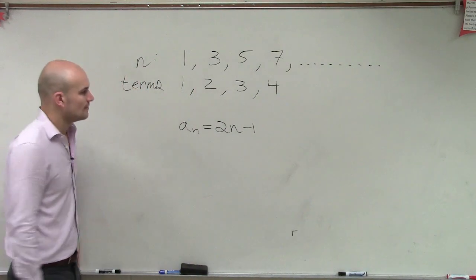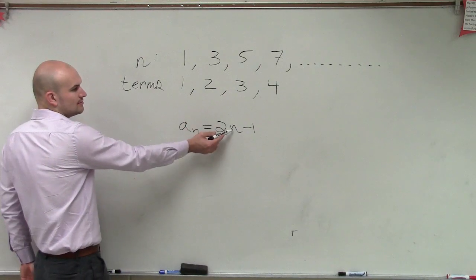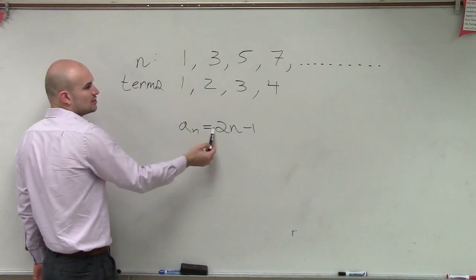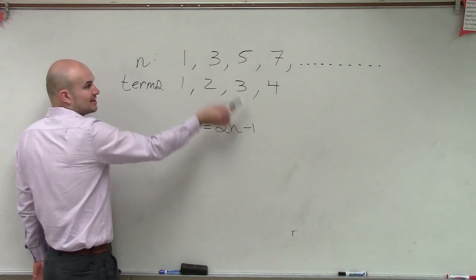So if I plug in 1 for n, 2 times 1 is 2 minus 1 is 1. If I do 2, 2 times 2 is 4 minus 1 is 3.